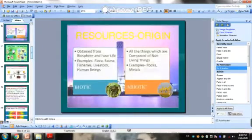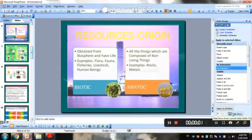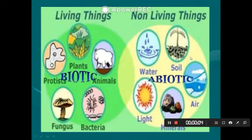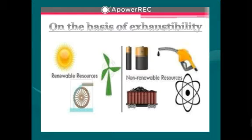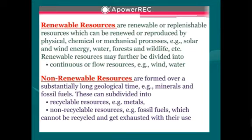The second classification is on the basis of exhaustibility: renewable and non-renewable. Renewable resources are the type of resources that can be renewed again. Non-renewable resources are the type that cannot be renewed. Wind and water are examples of renewable resources.